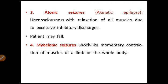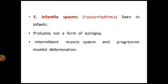Third is atonic seizure, also called akinetic epilepsy — unconsciousness with relaxation of all muscles due to excessive inhibitory discharge; the patient may fall. Fourth is myoclonic seizures: shock-like momentary contraction of muscles of a limb or the whole body. Fifth is infantile spasm, seen in infants — probably not a form of epilepsy but has symptomatic similarity — with intermittent muscle spasm and progressive mental deterioration.